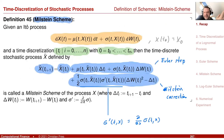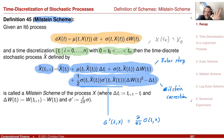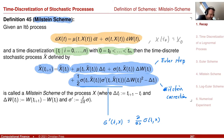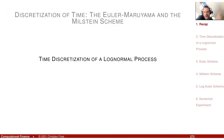Then we looked at the Milstein scheme, which improves the scheme if the coefficient is not constant — specifically if it has a dependence on x, here only for the case that sigma depends on x, so sigma prime enters. We also saw the predictor-corrector scheme, which I won't use in this example.